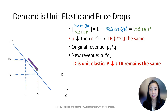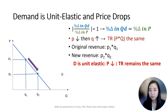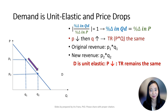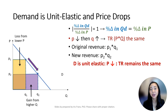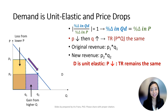When demand is unit elastic and the price drops, quantity demanded rises about the same magnitude. Therefore, total revenue remains the same. Draw a downward pointing arrow to indicate the decreased price, and draw an upward pointing arrow about the same size to indicate the increased quantity. As the arrows are about the same size, neither dominates, and total revenue remains the same. The original revenue is P1Q1, the yellow rectangle, and the new revenue is P2Q2, the purple rectangle. As you can see, the revenue gained from a higher quantity is the same as the revenue lost from a lower price. Therefore, total revenue remains the same.